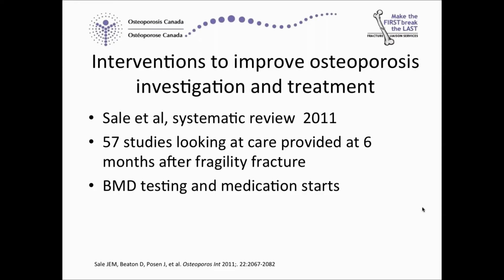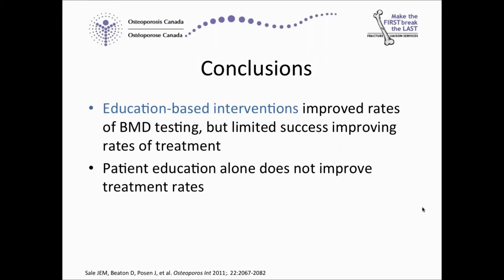I'm going to start by looking at a little bit of the literature. There was a systematic review published in 2011 that looked at interventions to improve osteoporosis investigation and treatment. They looked at 57 studies and were looking at the care provided six months after a fragility fracture, targeting BMD testing — that's bone mineral density testing — and medication starts.